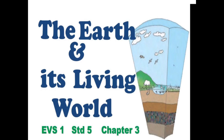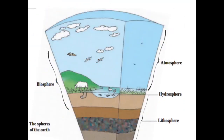This is the picture of the spheres of the Earth. So the lowermost part is called the lithosphere — means land. The presence of land is known as the lithosphere.